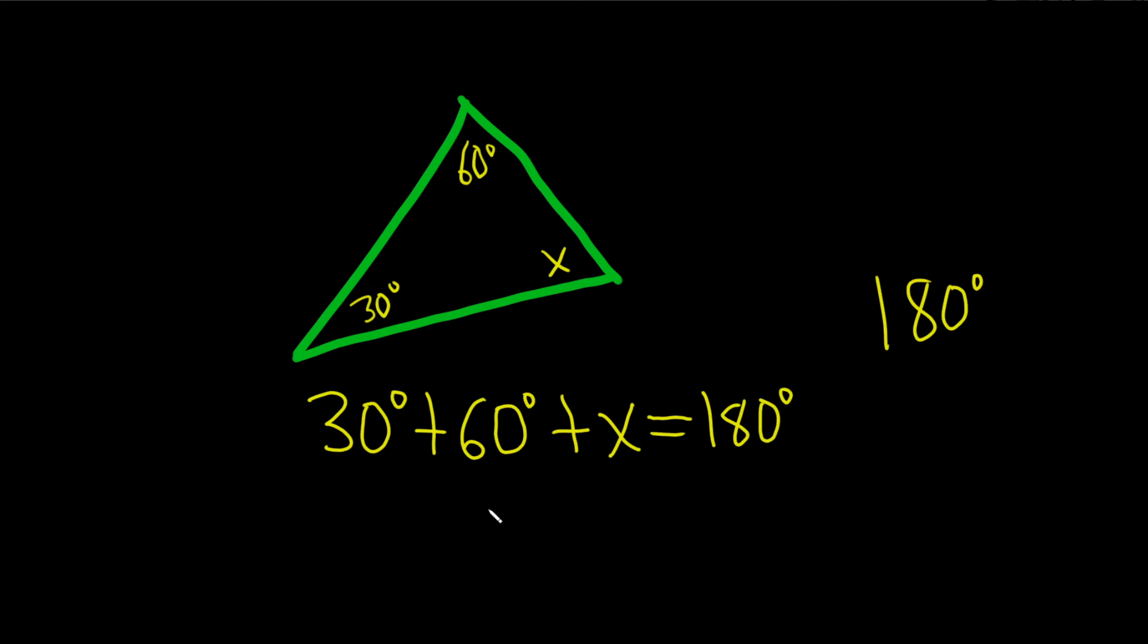So 30 plus 60 is 90 degrees, plus X, and this equals 180 degrees. Then you just subtract 90 from both sides, and you end up with X equals 90 degrees.